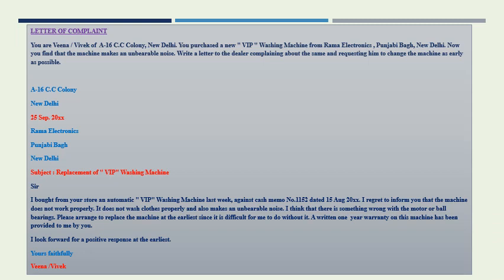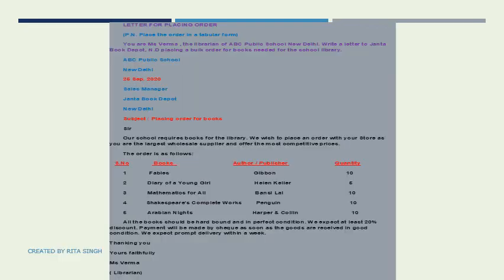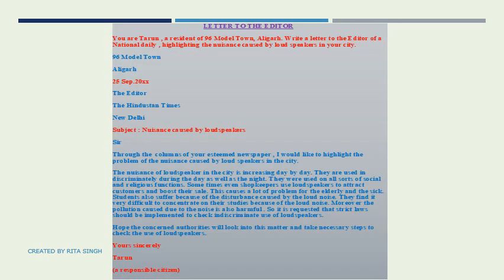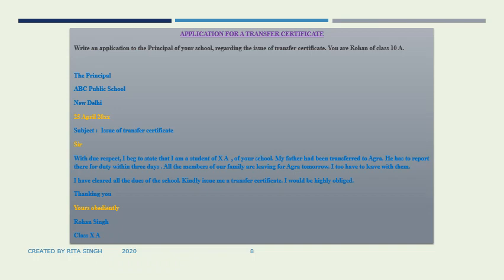Children, a few examples of formal letters have been mentioned here for your convenience. Kindly go through them. The first one is a letter of complaint. This is an example of a letter for placing an order — please note that the order is placed in a tabular form. Next we have a letter to the editor. This is an application for a transfer certificate addressed to the principal of a school. Kindly go through these.